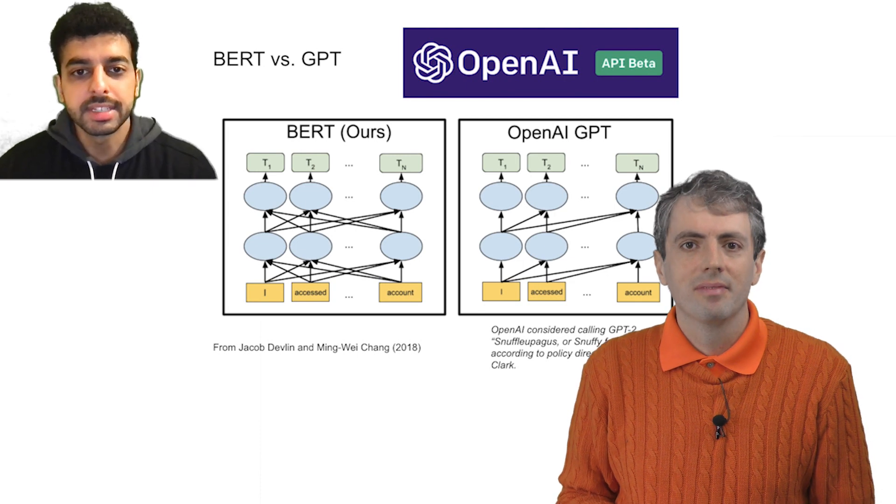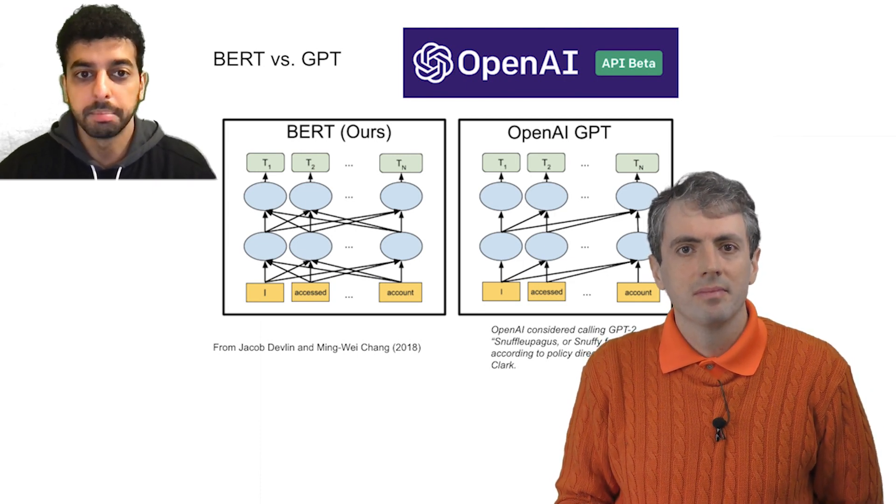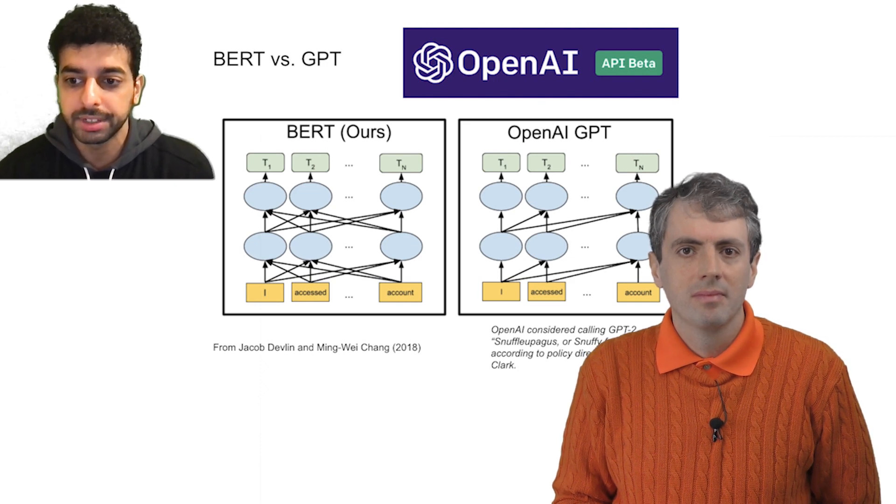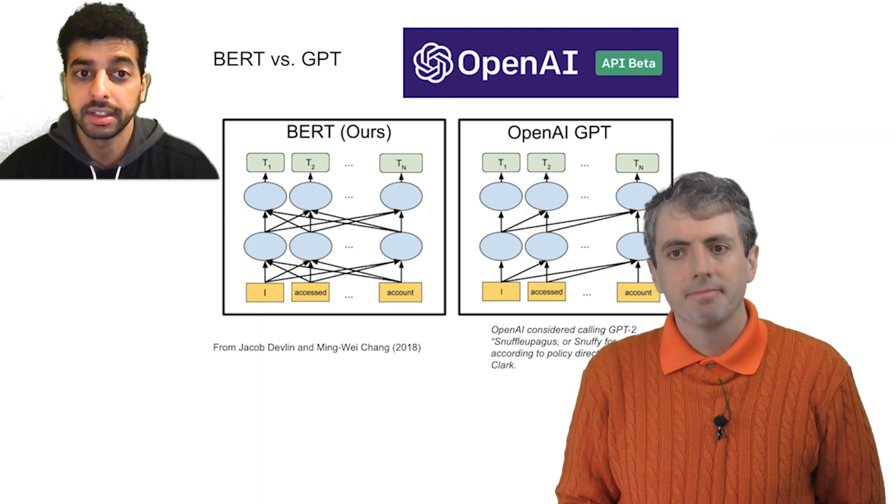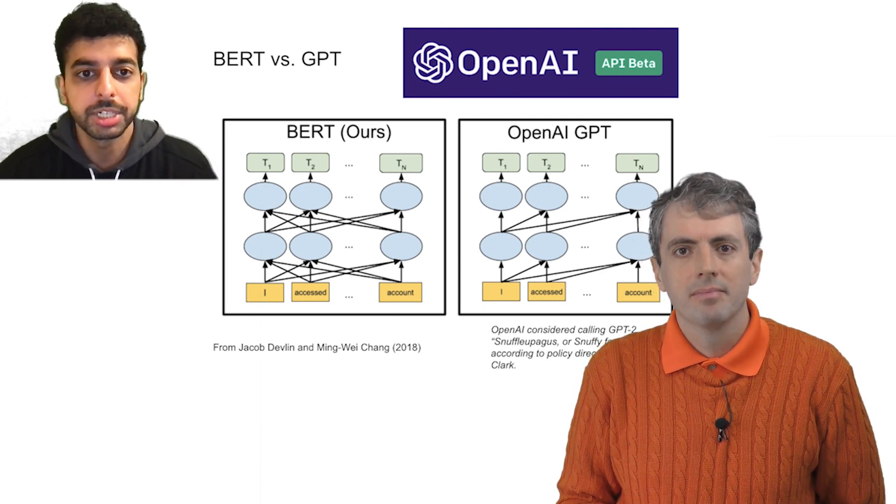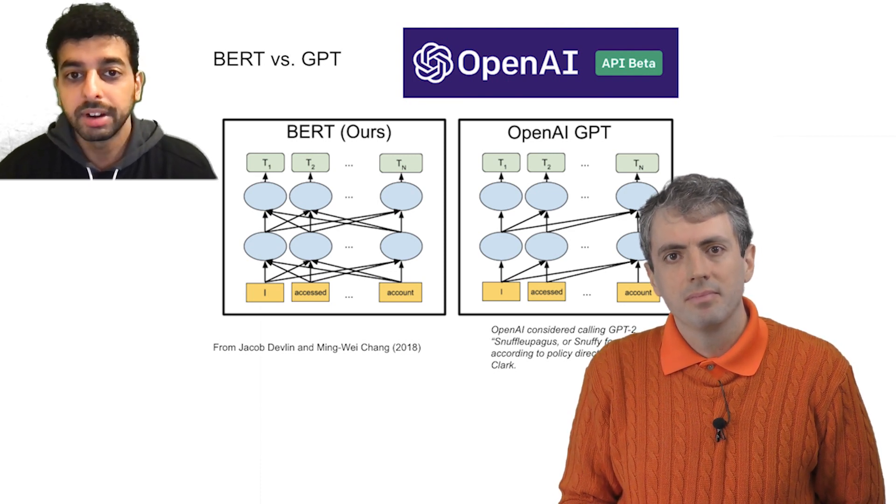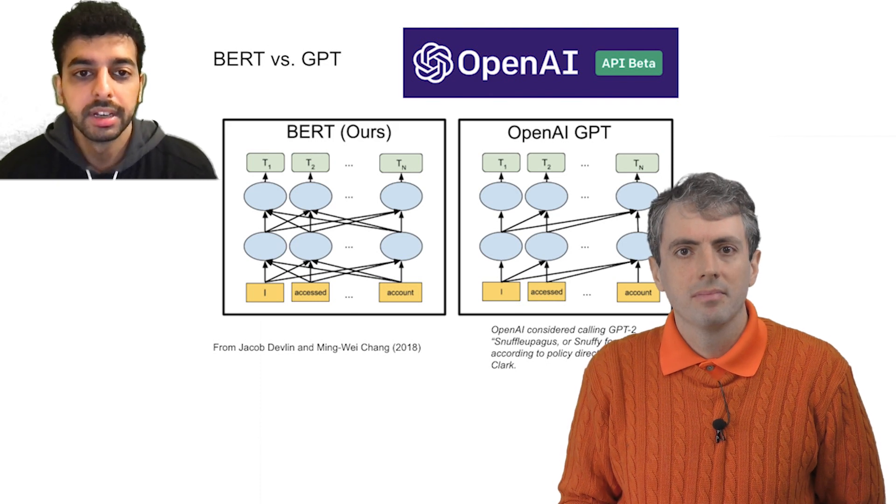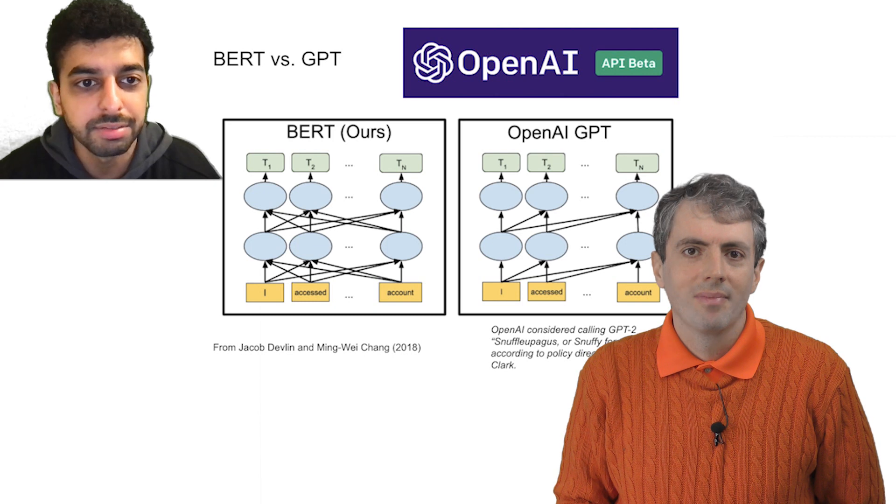Well, probably the most salient difference is that BERT is a masked language model that has access to context on both sides, whereas GPT is a left to right language model that only has access to tokens on the left-hand side. This is also called an autoregressive framework, which makes it easier to train and more data efficient. However, many of the intuitions from BERT can be carried over, and the Verge's James Vincent reports that they consider naming it Snuffleuppet.